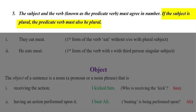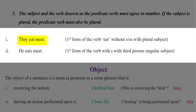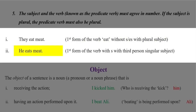If the subject is plural, the verb must also be plural. For example, 'they eat meat' — the first form of the verb eat without -s goes with the plural subject. But 'he eats meat' — the first form of the verb with -s is used with a third person singular subject in a present indefinite sentence.